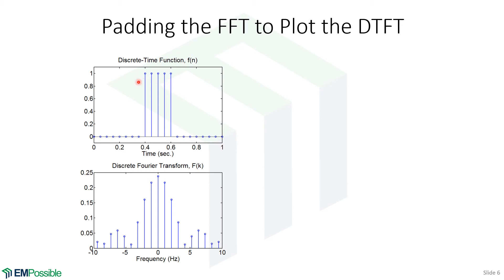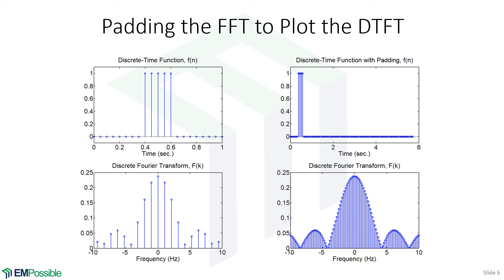Let's say we have our discrete time function here. Again, it's our square wave function with a bunch of zeros and ones in the middle. When we calculate the discrete Fourier transform, we get something like this. What if I wanted to visualize this as a nice continuous line? What would that look like? How would I do that? What I need to do is take this same function and just add a whole bunch of zeros to the end.